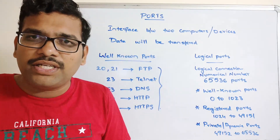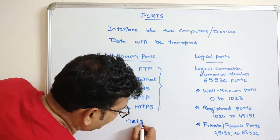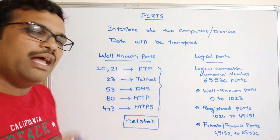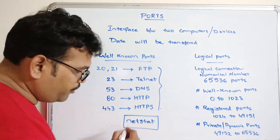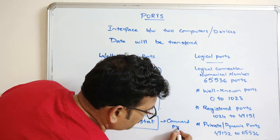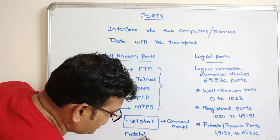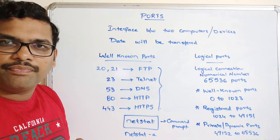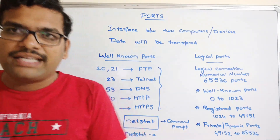To find out what ports are in use and what are unused, and to get all port information, use the command called netstat — network statistics. You need to use this in the command prompt. If you use 'netstat -a', it will give all information about all receiving ports.